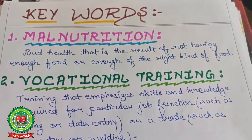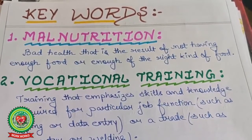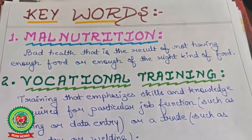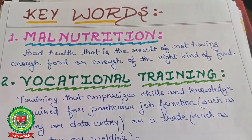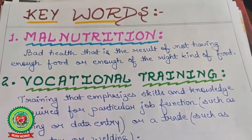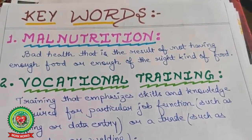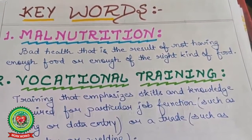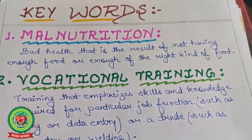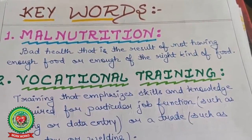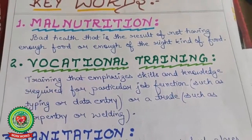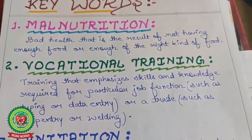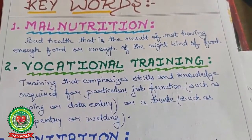Now some keywords I'm going to use in my lecture. Number one: malnutrition — bad health that is a result of not having enough food or the right kind of food; when someone is not receiving proper nutritious food, it is considered malnutrition. Second: vocational training — training that emphasizes skills and knowledge required for particular job functions, such as typing or data entry.